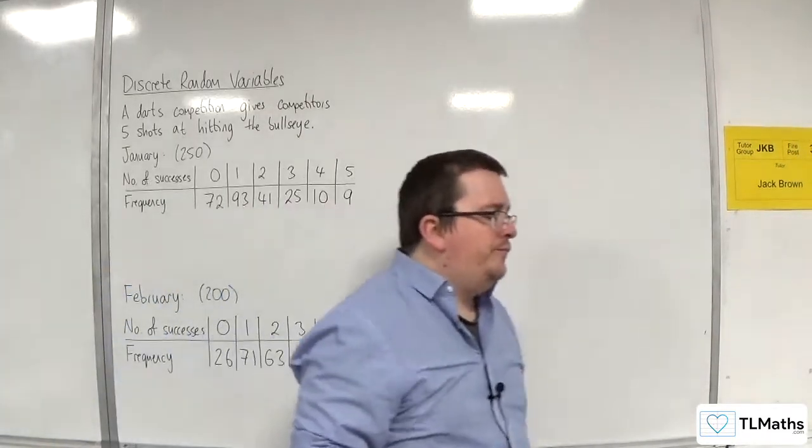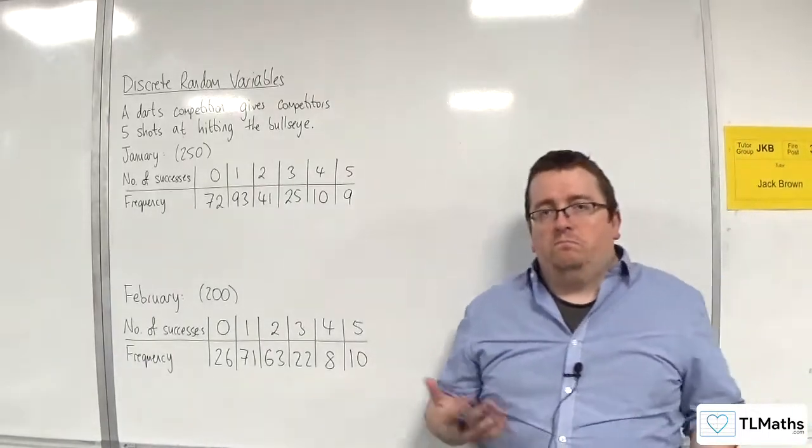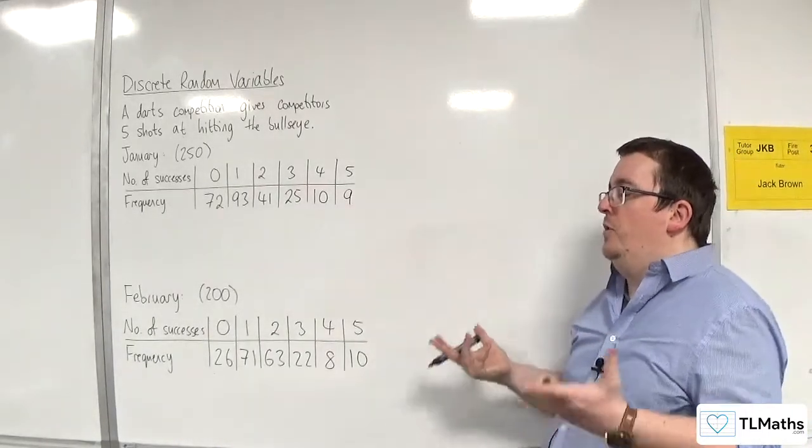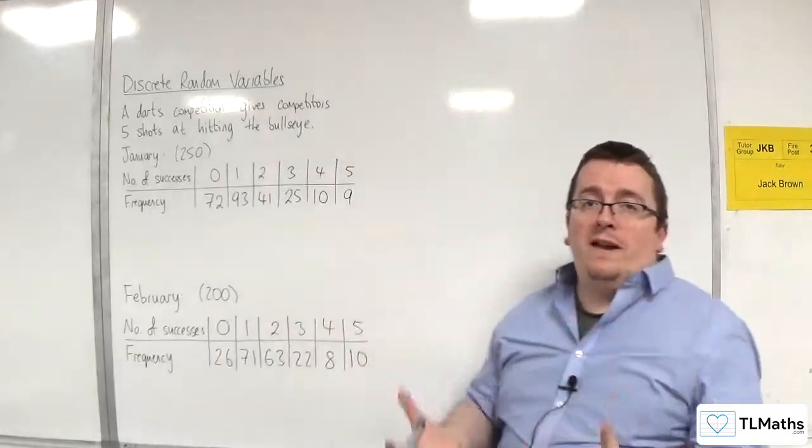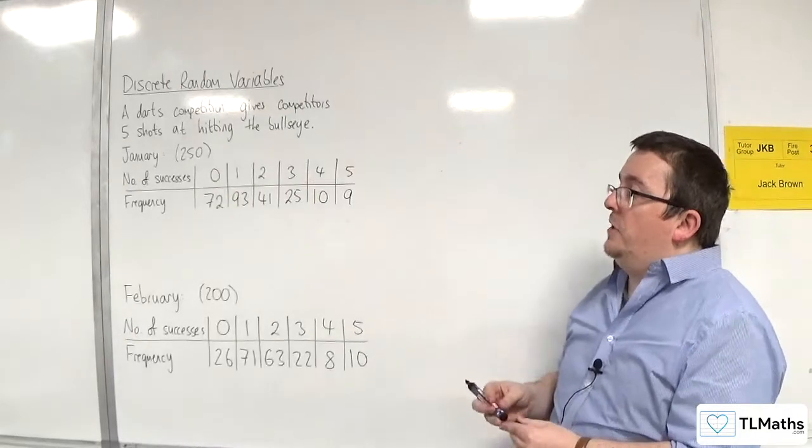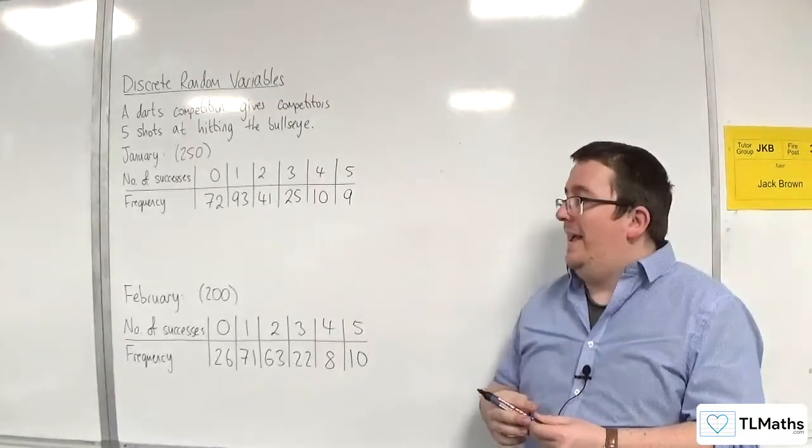However, that's quite enough to be able to estimate some probabilities. What we're going to do is use relative frequencies to compare January and February.